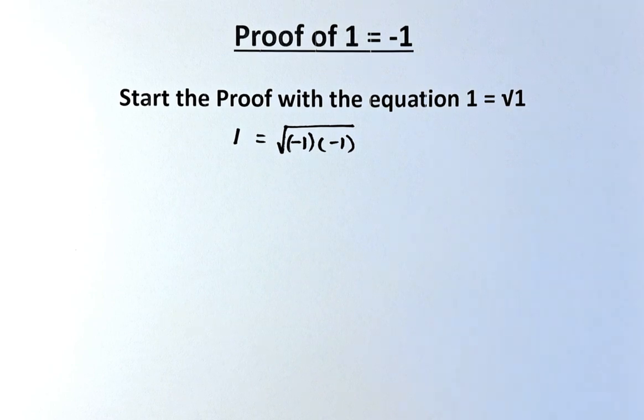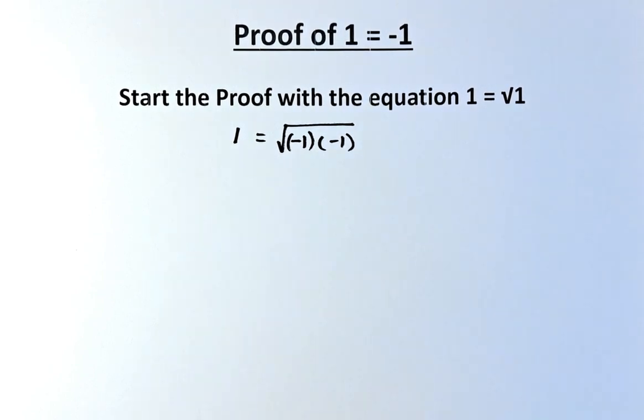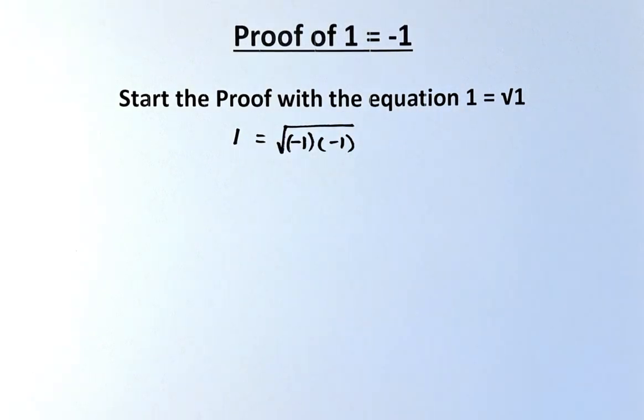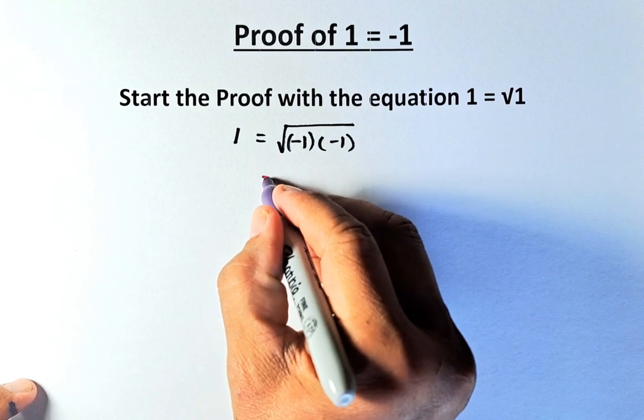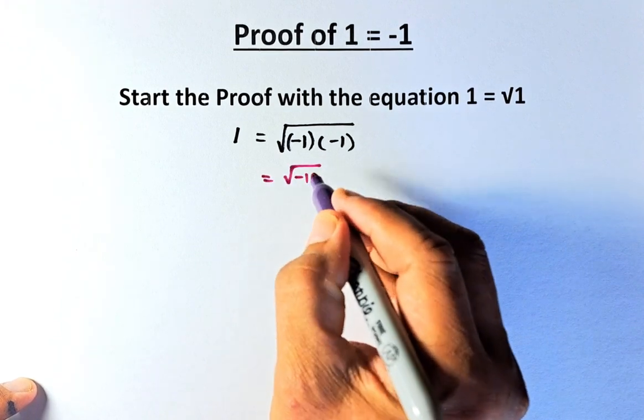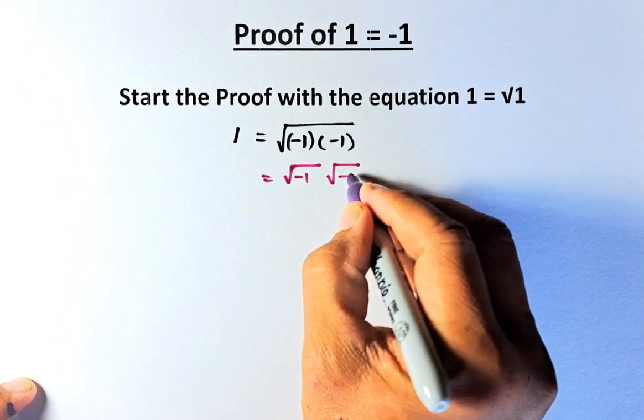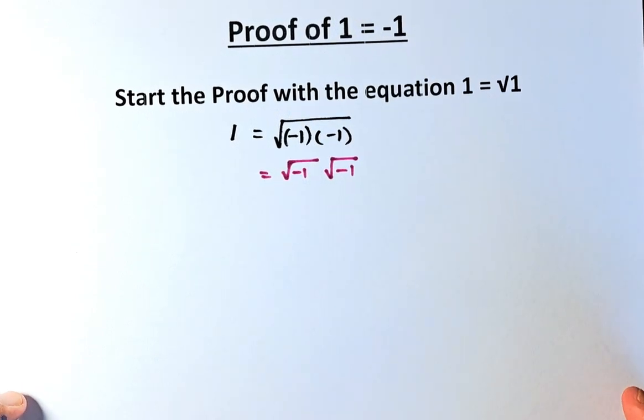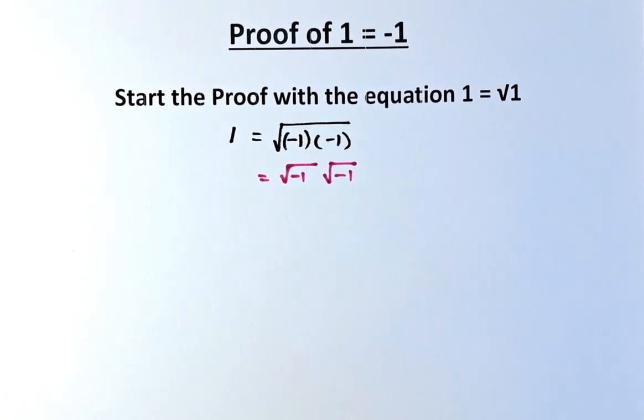So that is also fine. So the second step of this proof is that we are going to remove this bracket and write them as square root of negative 1 multiplied by the square root of negative 1. So that is the second step of the proof.